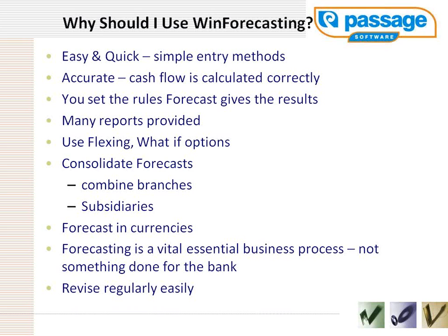Flexing is included — what if options. What if my costs go up 5%? What if my unit prices come down 5%? You are provided the facility to consolidate forecasts, combine branches, combine subsidiaries, group like forecasts into consolidation. We support foreign currency or multiple currencies — we can consolidate in currency and translate that currency rate, or just budget in US dollars. The forecasting is turned into an essential business process, not something done for the bank. You are then allowed and capable of revising and reviewing these forecasts on a regular basis to see why you exceeded forecasts or didn't make forecasts.